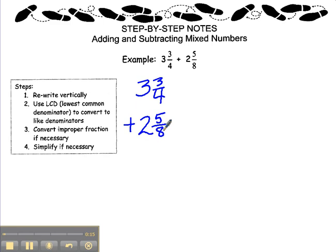The common denominator for 3 fourths and 5 eighths would be eighths, because that would be the least common denominator of 4 and 8.